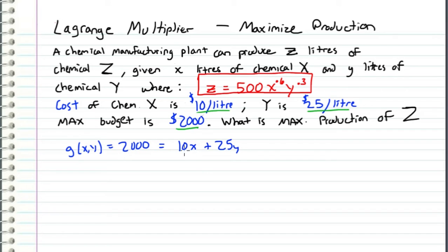So what this means is that since chemical x costs $10 per liter then however many liters we have we multiply it by 10 to get the total cost of chemical x, plus the total cost of chemical y which is $25 per liter times the number of liters y. And this can equal a maximum of $2,000 because that's our budget. So this is our constraint.